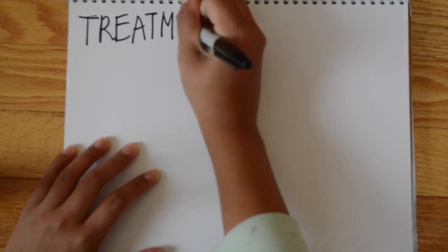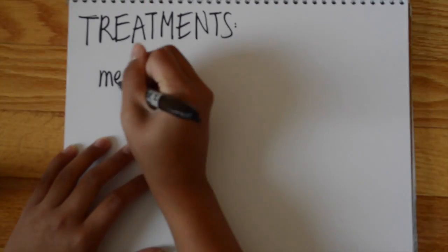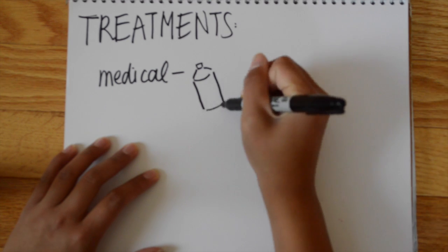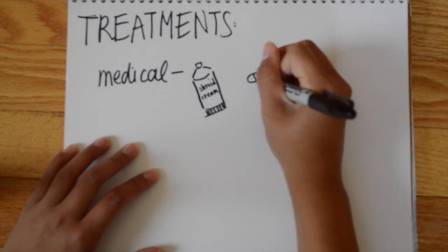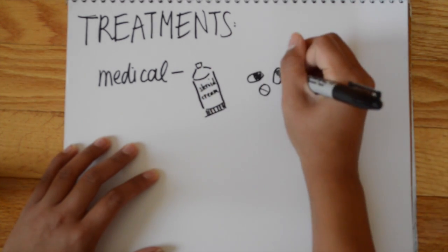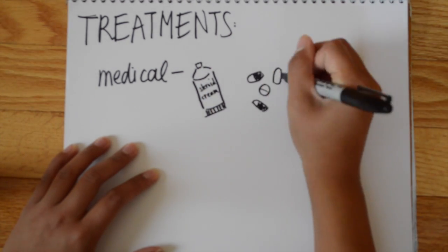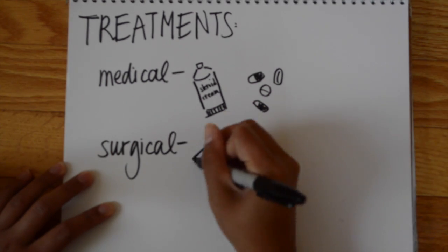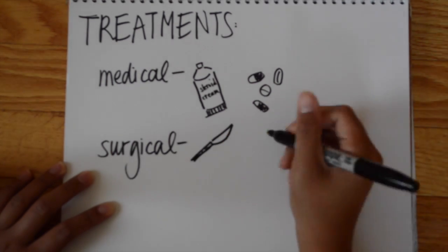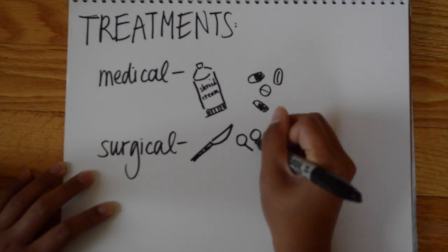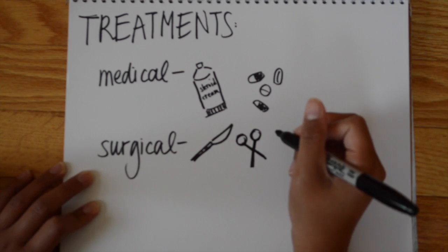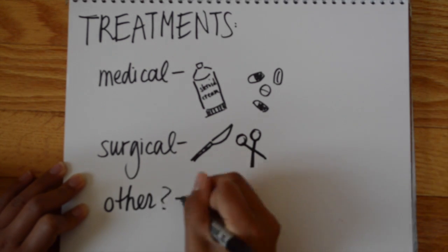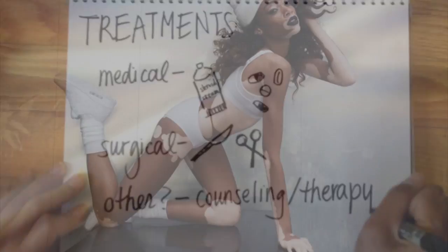There is no cure for vitiligo, but there are many medicinal, surgical, and other treatments that minimize the look of discoloration on your skin. Some options are topical corticosteroid creams, skin grafts, laser therapy, or just using makeup to cover up the lighter spots.